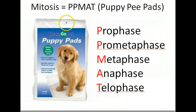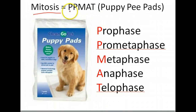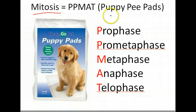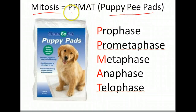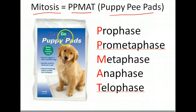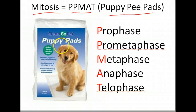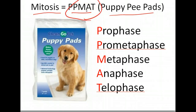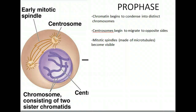To help visualize the steps of mitosis, we're going to use a mnemonic: prophase, prometaphase, metaphase, anaphase, and telophase — which can be abbreviated as PPMAT. Think of 'puppy pee pads' — PP MAT. For visual learners, picture a dog peeing on a pee pad. If you can visualize that, you have your PPMAT and your steps of mitosis. The first step of mitosis is prophase.